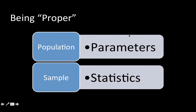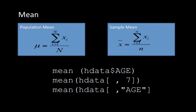Let us now take a look at some formulas for calculating mean and so on. We can calculate either the mean of the population or the mean of the sample. The mechanics are exactly the same. To calculate the mean of the population — the mean of the population is represented by the Greek symbol mu — you simply add up all the values: sigma i equals 1 to N, Xi.